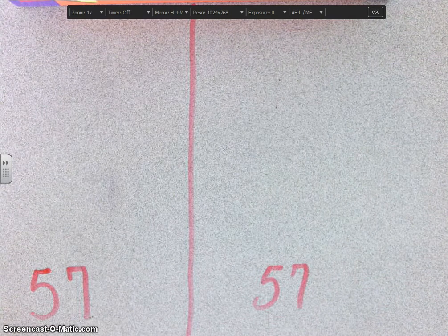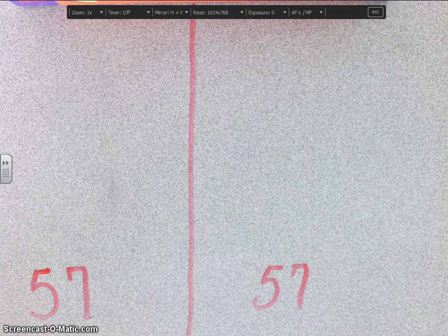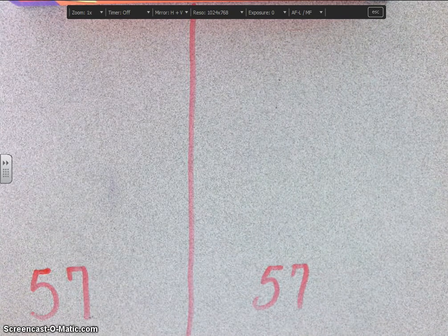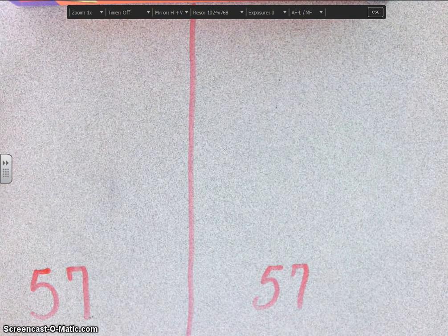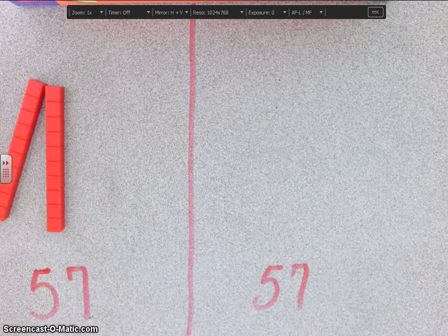Okay, I'm going to teach you how to make fifty-seven a number of different ways using base tens. So the first thing we're going to do is we're going to put out five tens. One, two, three, four, five.